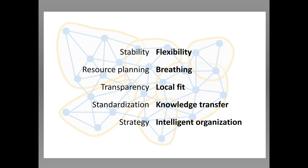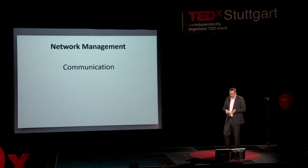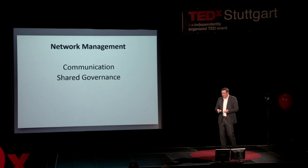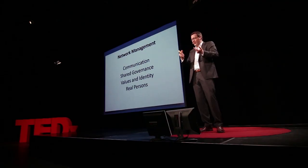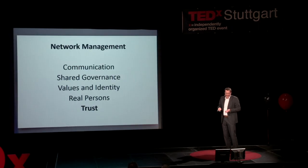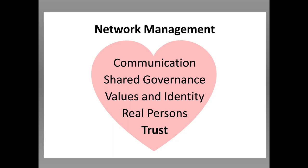To manage a network, first we have to manage communication — most importantly. Then shared governance: how to bring decisions to life. We have to define the values and identity of the network — why we are here, why we are part of the same network. We have to deal with real persons, not functions or roles. And we have to trust — that is the currency of every network. Networks only work when there is trust, and it is also about compassion, about something more than just the formal side.